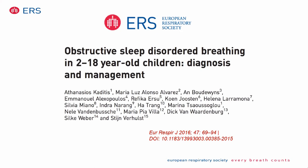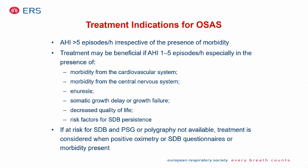What did the ERS recommend for treatment of children with OSA? If polysomnography is available and the OAHI is greater than 5, treatment is recommended. Treatment can also be beneficial if OSA is mild with OAHI 1-5 and there is morbidity from cardiovascular, CNS, or quality of life issues. Without polysomnography or polygraphy, treatment is recommended if oximetry is positive, or if the sleep-disordered breathing questionnaire is positive, or if the child has morbidity even without objective tools.